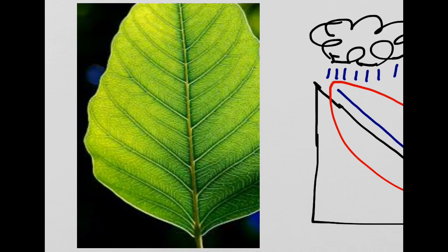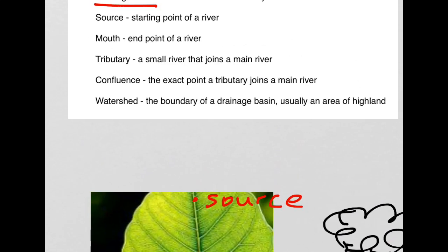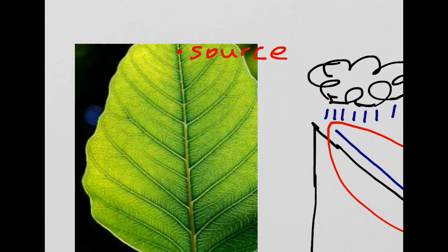The first term that we are concerned with is represented by the red dot. That is the source of the river. The source is the starting point of a river and is usually in an area of high land.